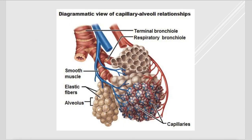This image shows the gas exchange structures. These bundles are the alveolar sacs, made up of individual alveoli. Like a net over these alveolar sacs, you have the capillary beds — that's how we exchange gases. Oxygen goes from the alveoli into the blood, and CO2 goes from the blood into the alveoli so we can exhale it.